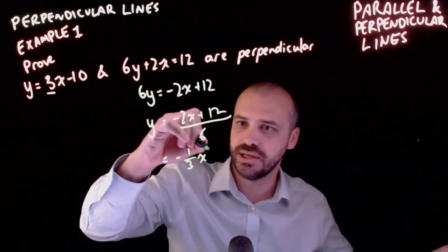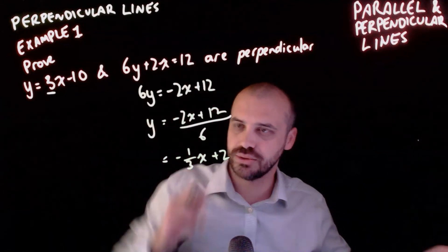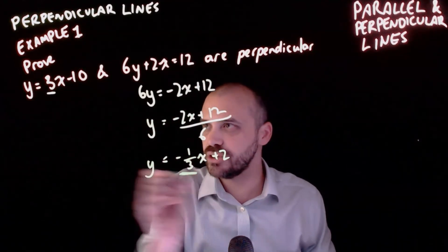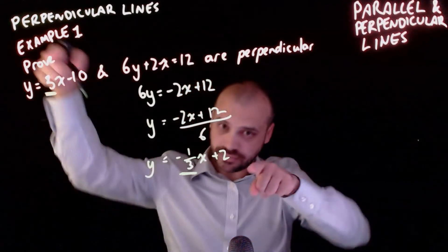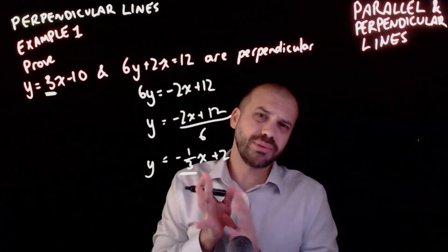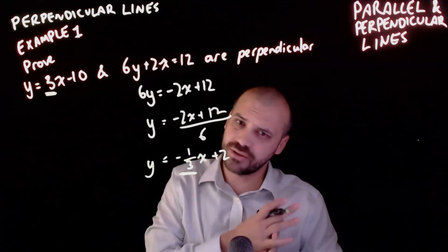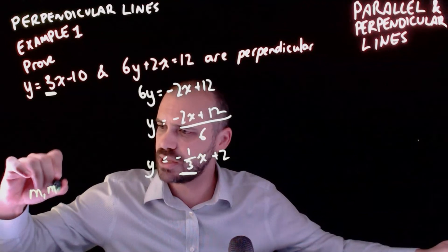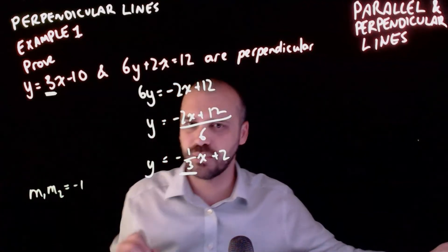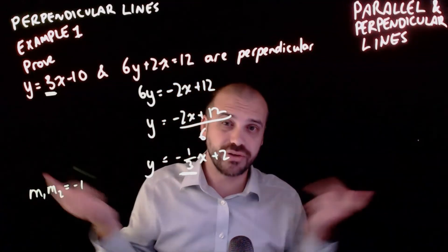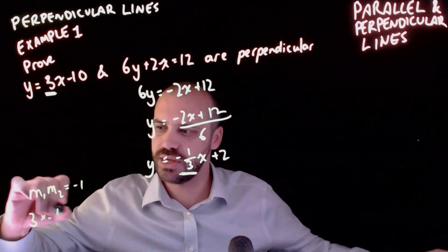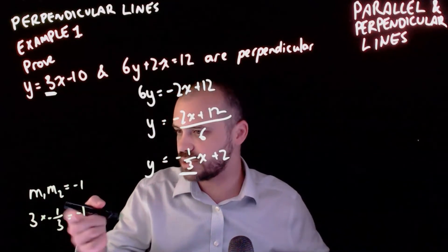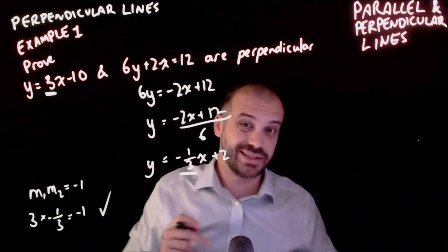And 12 divided by 6 is 2, so y equals negative 1/3 x plus 2, giving gradient negative 1/3. Compared to gradient 3 - they're negative reciprocals of each other. Using the formula M1 times M2 equals negative 1, substituting: 3 times negative 1/3 equals negative 1. That is true - proven perpendicular.